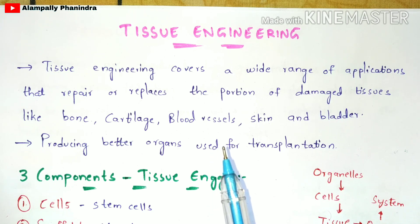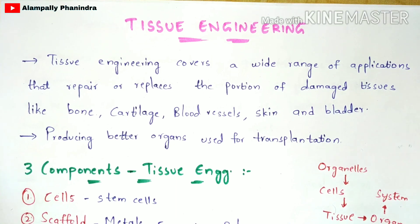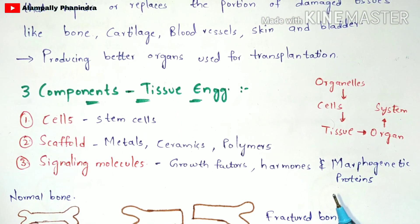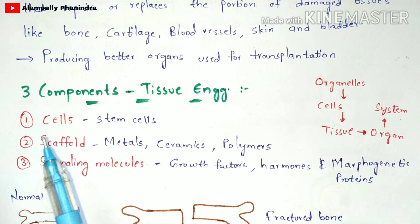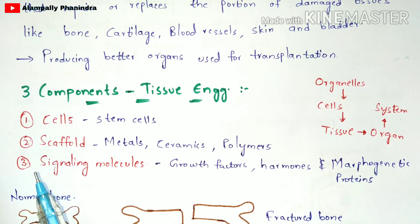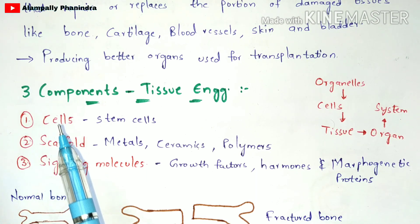There are three major components mainly used for tissue engineering: first is cells, second is scaffold, and the third is signaling molecules.